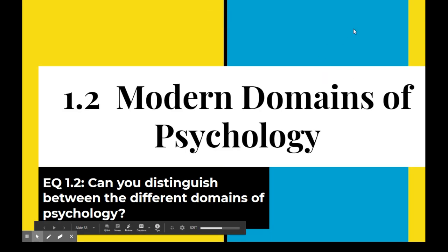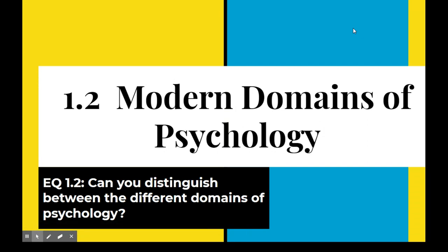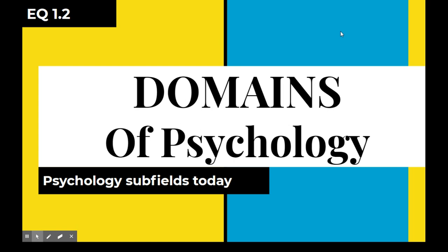We're going to go over real quick — this shouldn't take any time at all — modern domains of psychology. These are also known as subfields. Your EQ is distinguishing between the different domains. So the subfields of psychology — those terms are kind of interchangeable.